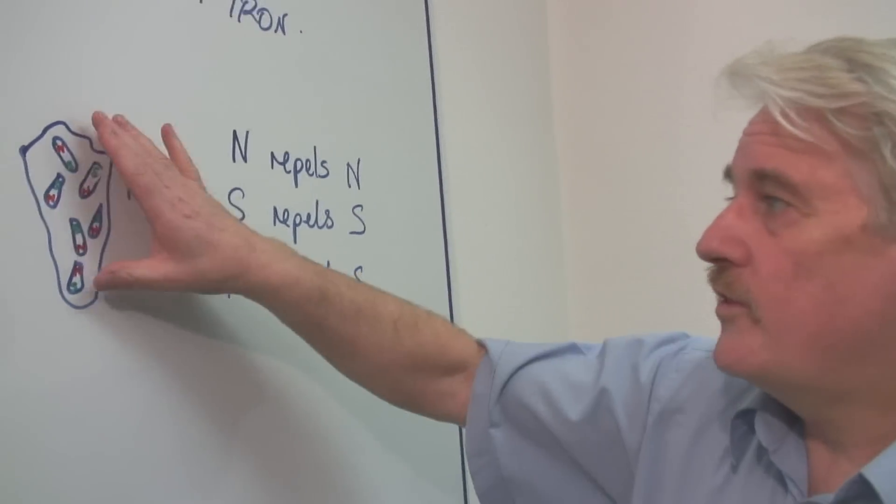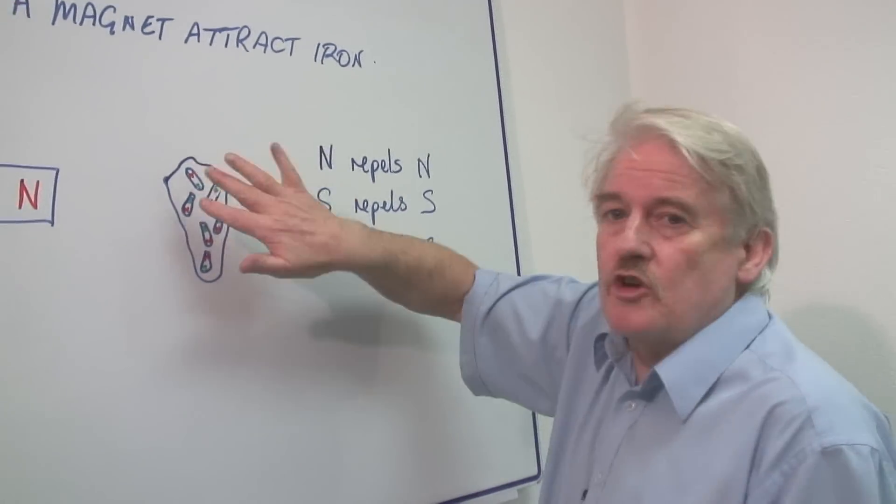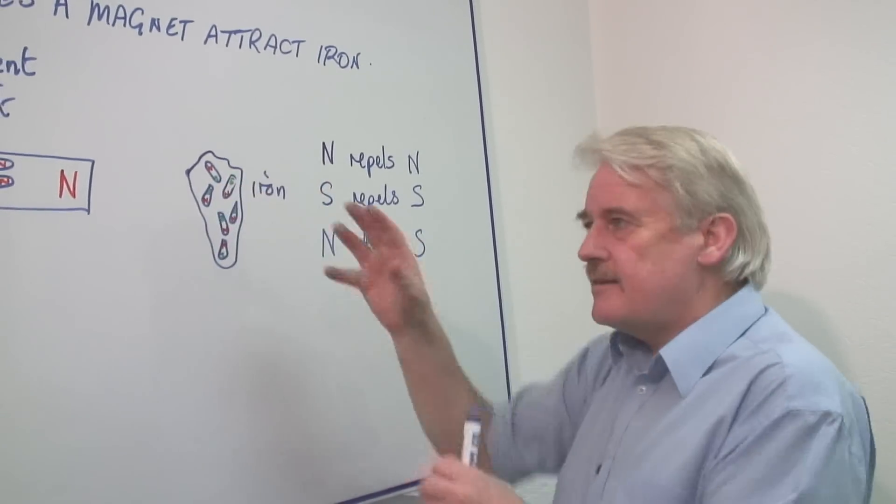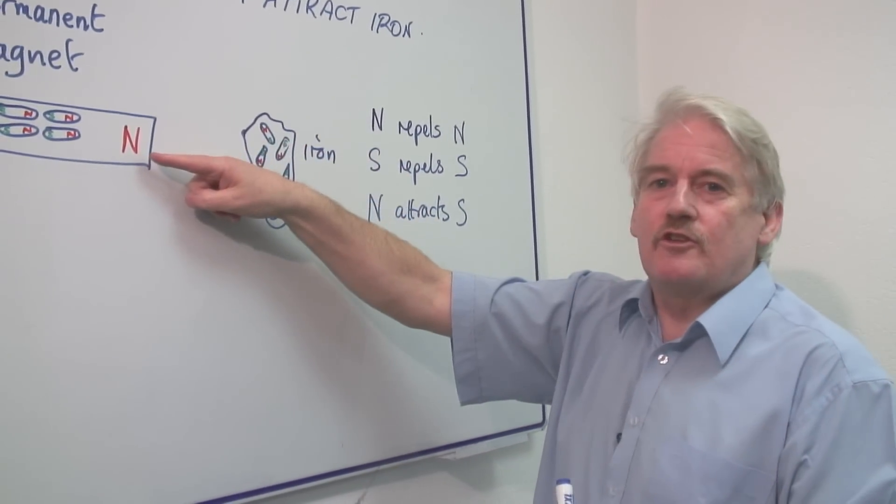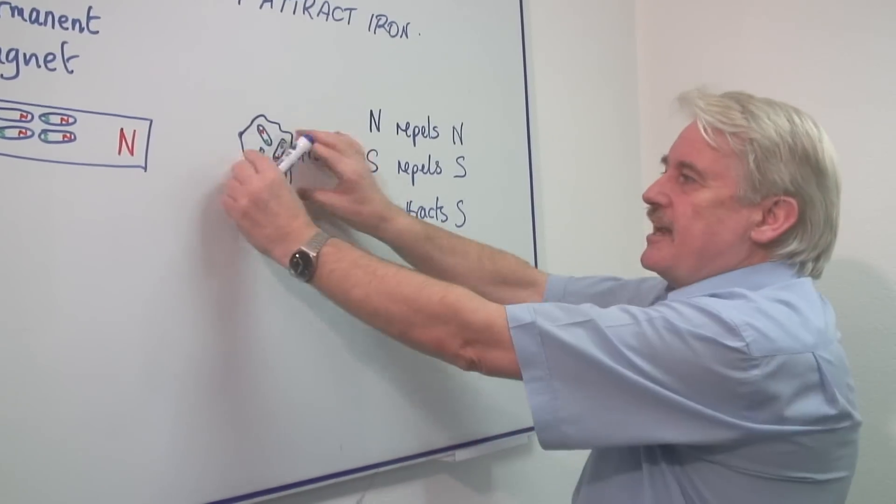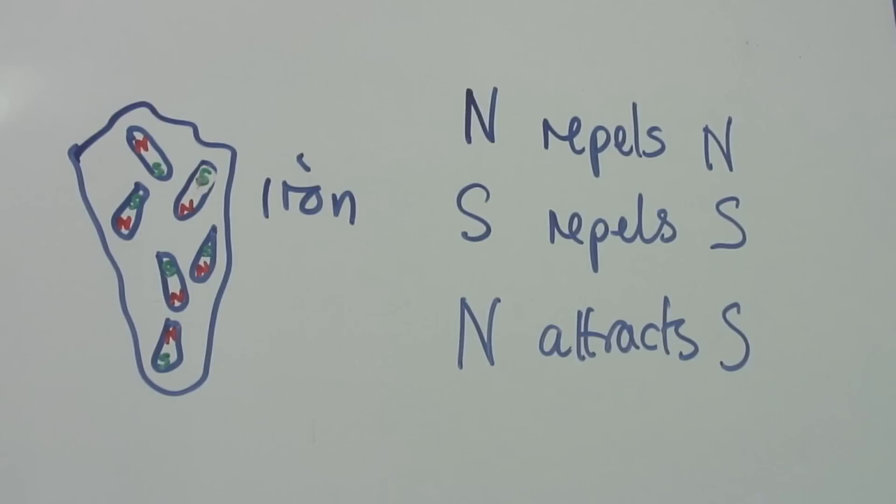So within this piece of iron, what is going to happen is all of the little domains as we call them inside flip round. So all the souths face the north and this becomes essentially another magnet. And the two attract. Of course, they stay attracted too because this is a permanent magnet.